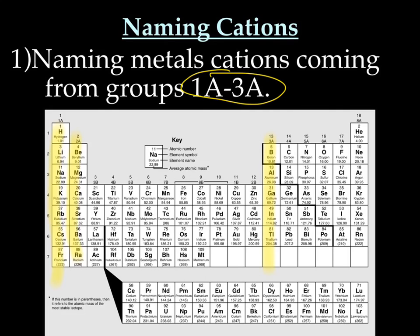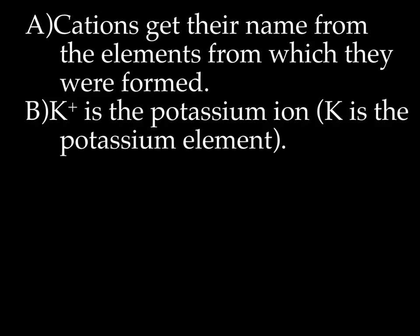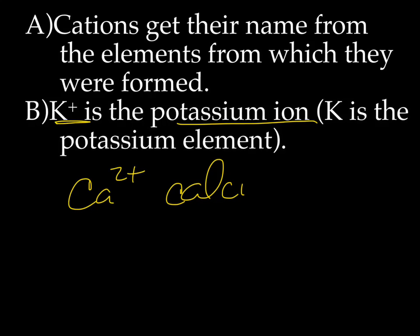Naming metal cations coming from groups 1A, 2A, and 3A is really easy. Cations coming from groups 1A, 2A, or 3A get the names directly from the elements from which they are formed. K1+ is called the potassium ion. If we had Ca2+, that would be the calcium ion. So naming metal cations from groups 1A, 2A, and 3A is really, really easy.